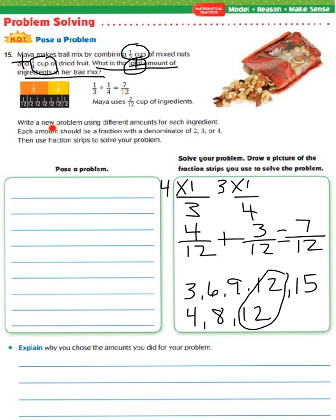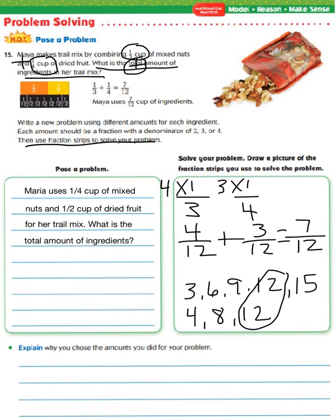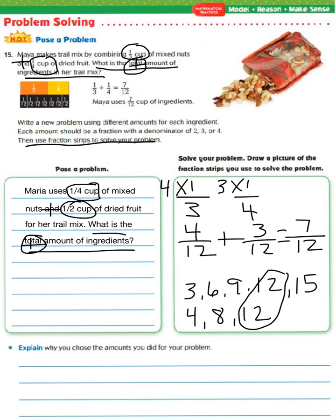Now it says to write a new problem using different amounts for each ingredient, each with a denominator of two, three, or four. Let's look at a possible new problem: Maria uses one-fourth cup of mixed nuts and one-half cup of dried fruit for her trail mix. What is the total amount of ingredients? The keyword 'total' means to add, and 'and' also signals addition. So the word problem is telling us to add the two fractions.